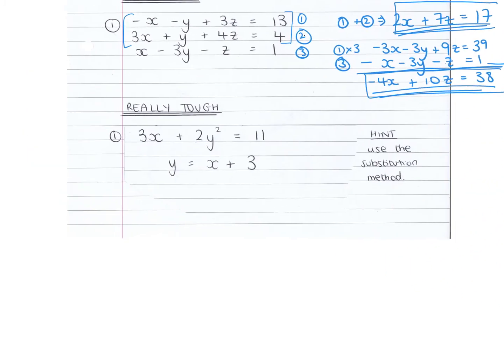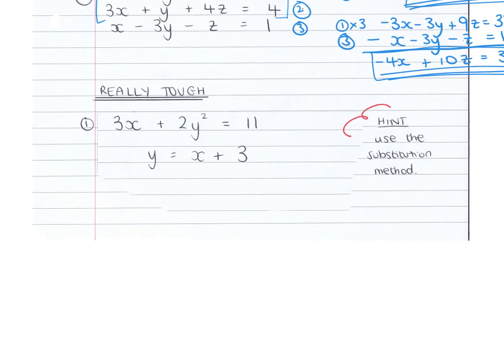Right, very last one then. I put really tough at this one. Hint: use the substitution method. So basically, all you need to do is substitute in place of y. We know here that y is equal to x plus 3. So here, where I've got y, I'm going to put x plus 3 instead. And by doing that substitution, I then end up with 3x plus 2 times x plus 3 squared equals 11.